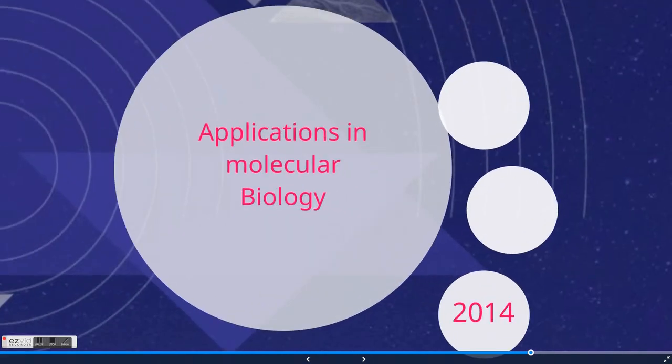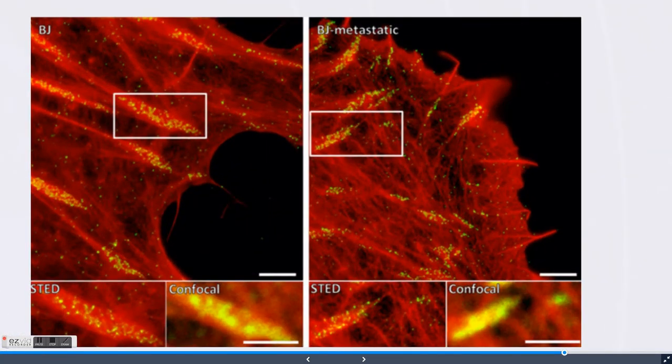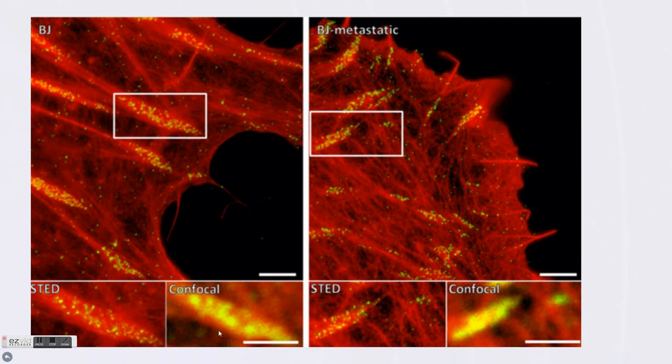This has many applications in molecular biology. One example is shown here. We're looking at focal adhesion proteins in green, contrasting metastatic cancer cells with normal cells. You can see at the bottom the difference in resolution between STED microscopy and regular confocal microscopy. This powerful tool of visualization can really give insight into pathways and diseases at the cellular level.